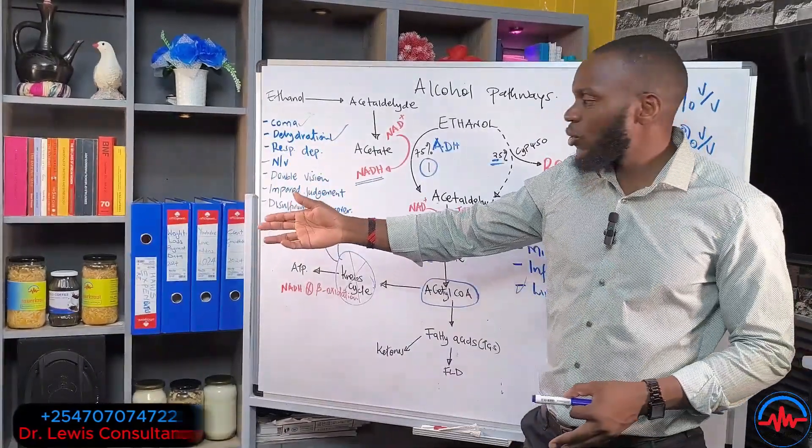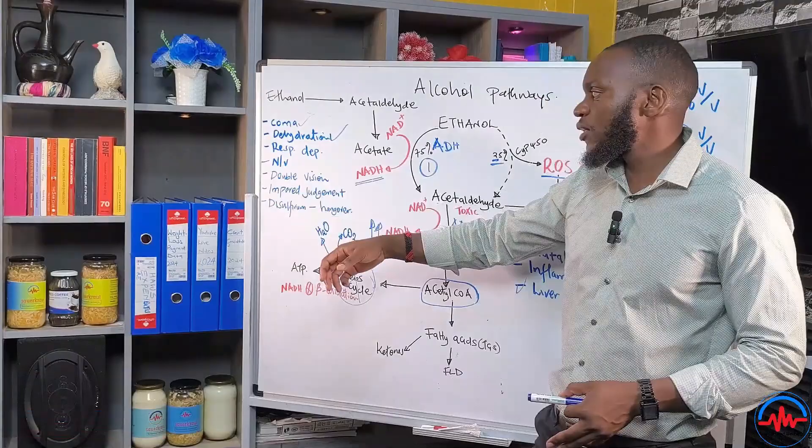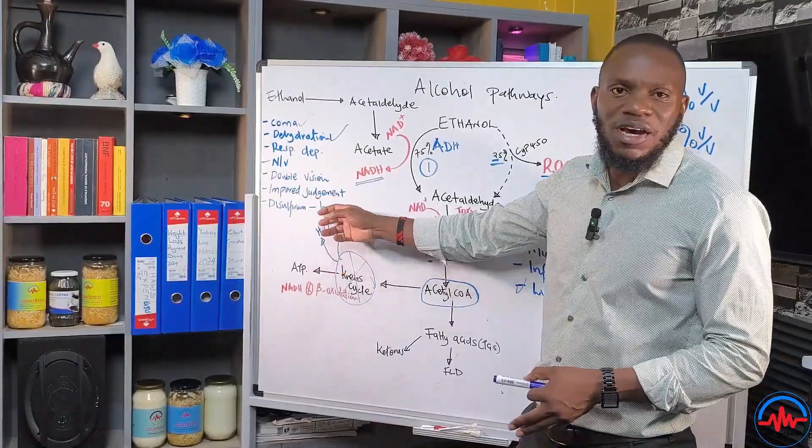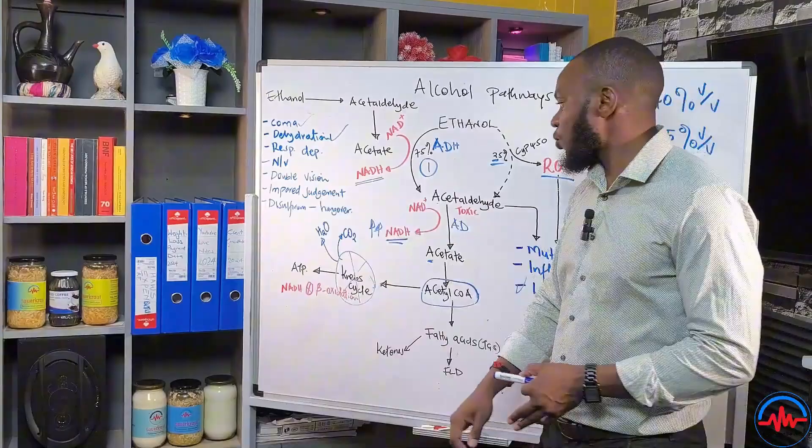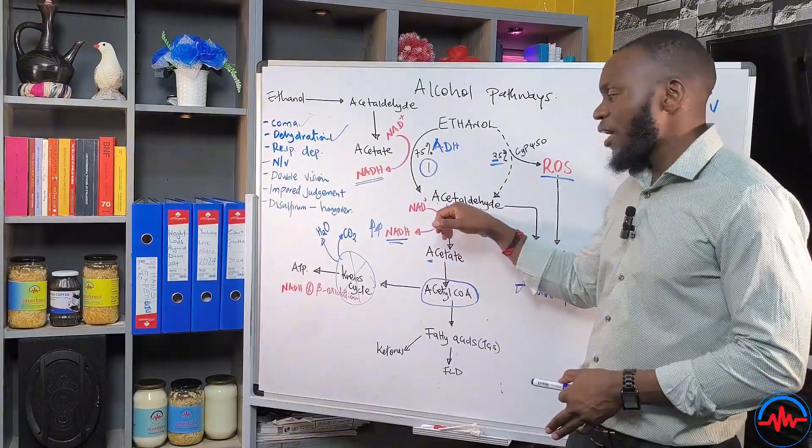We start from mild symptoms of intoxication like nausea and vomiting, double vision, impaired judgment. We also have the hangovers after the metabolism of alcohol, and this is coming in because of accumulation of acetaldehyde.